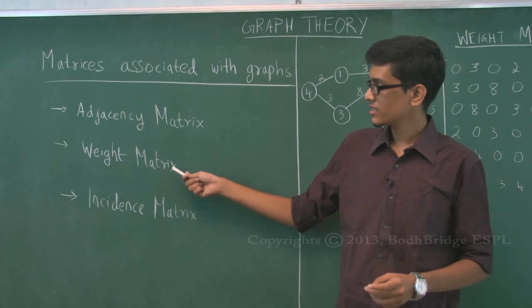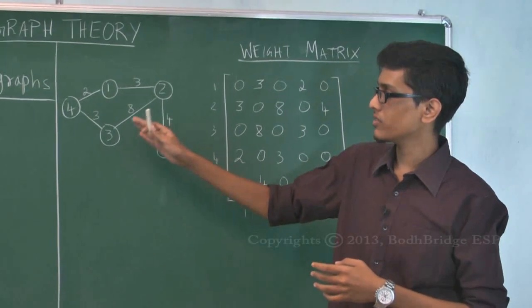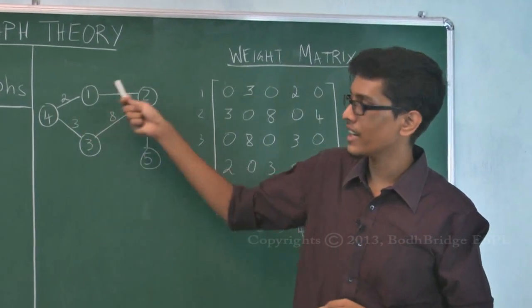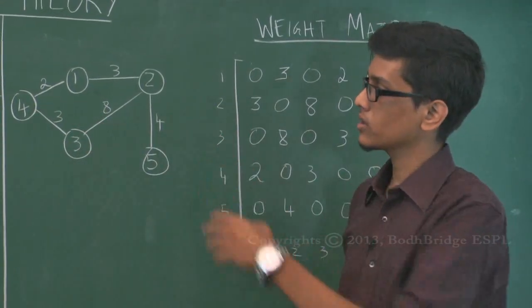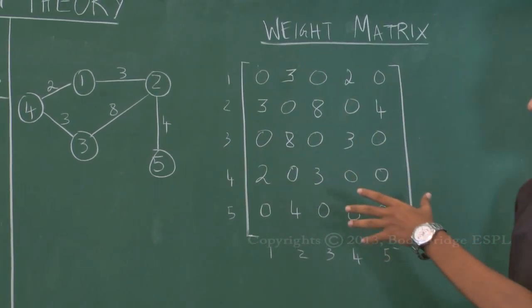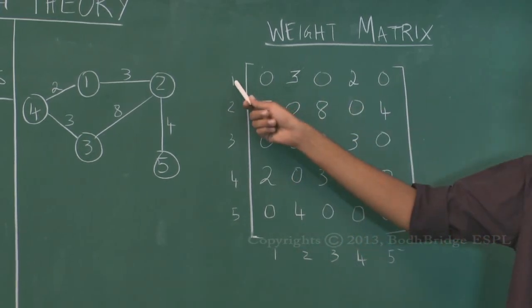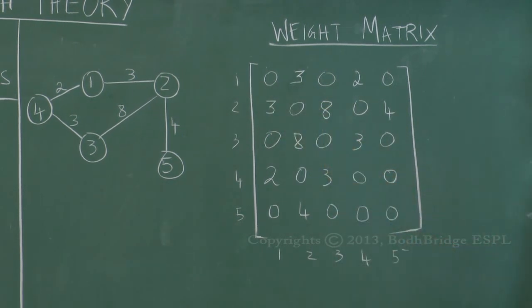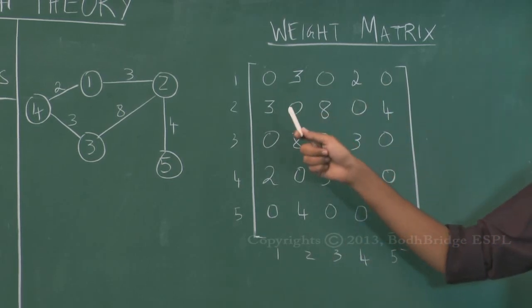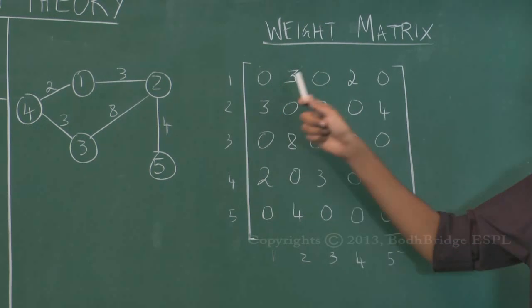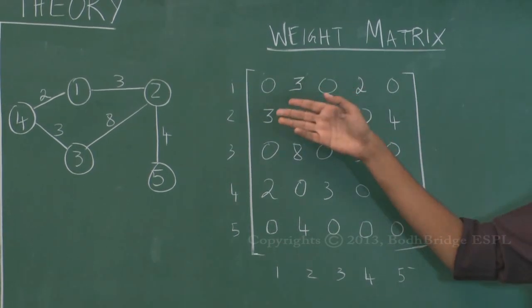Now we will discuss the second kind: the weight matrix. In this graph, which is the same as the previous example, weights are attached to the different edges — so the edge between 1 and 4 costs 2, and so on. In this matrix, the only difference is that instead of 1s we attach the weights. If there is a nonzero value in M(A,B), it means there is an edge between A and B and the cost of that edge is the nonzero value.